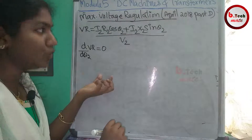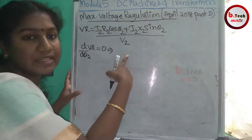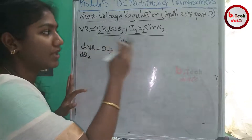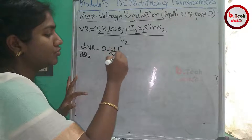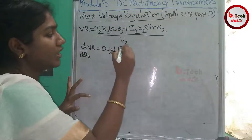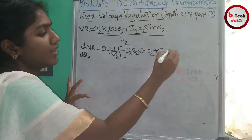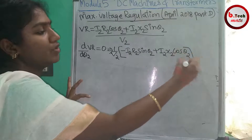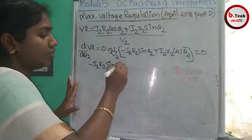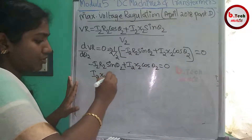We differentiate the voltage regulation equation with respect to θ₂ and set it equal to zero. Since V₂ is a constant in the denominator, we differentiate only the numerator. The derivative gives: minus I₂R₂ sinθ₂ plus I₂X₂ cosθ₂ equals zero.